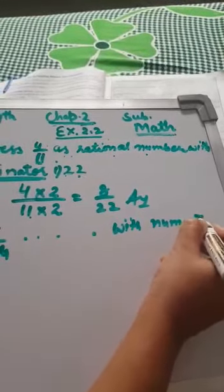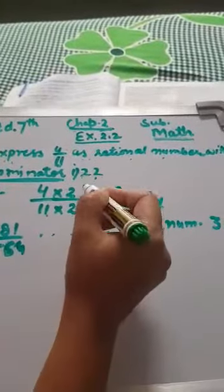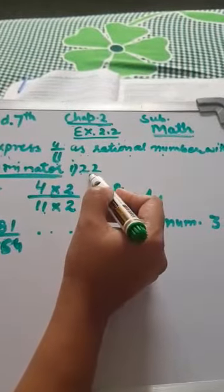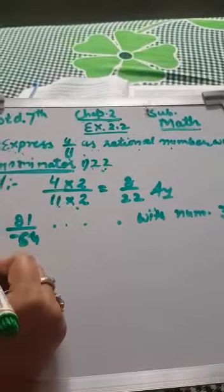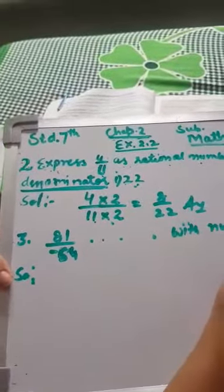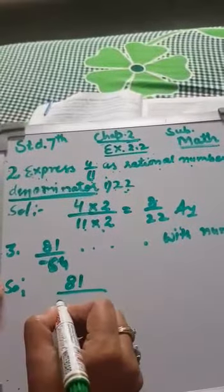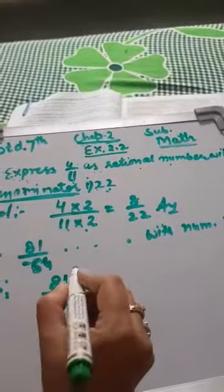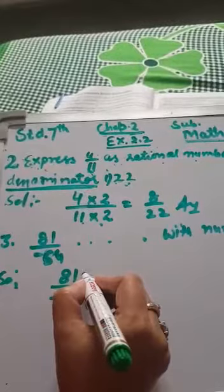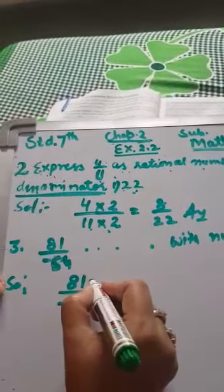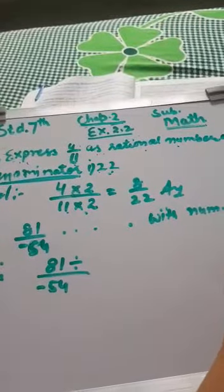This is a bit different from the first and second sums. In those, a smaller number was given and I had to make it bigger. Here I have to convert to a smaller number, so I will divide. The expression is 81 over minus 54, and I have to make 81 into 3. First I need to find what number to divide 81 by so that I get numerator 3.